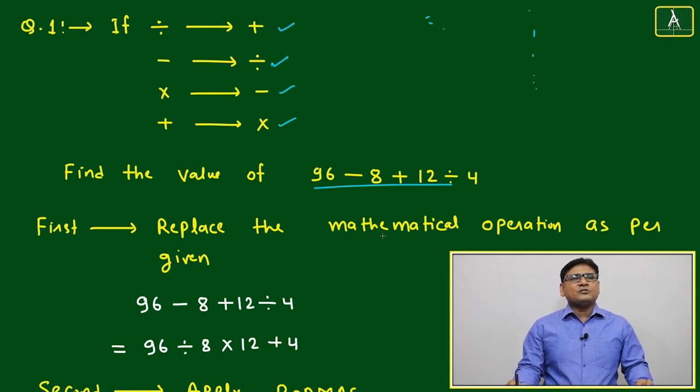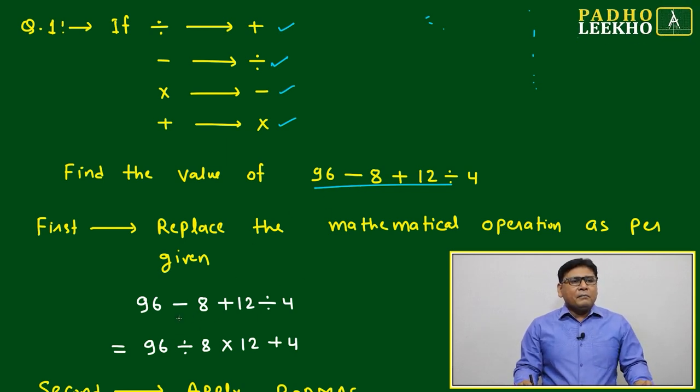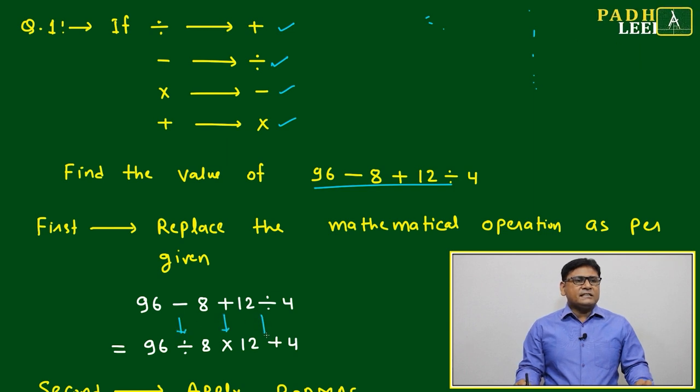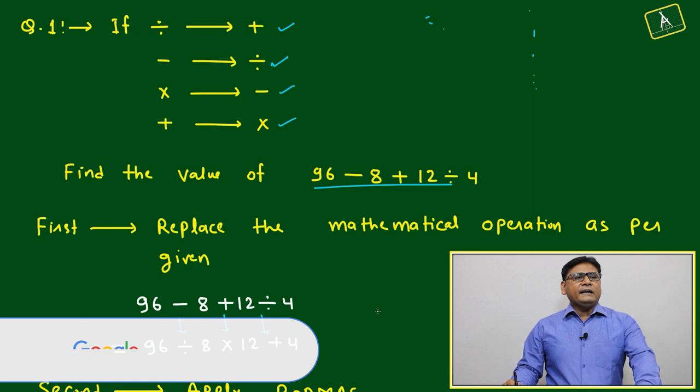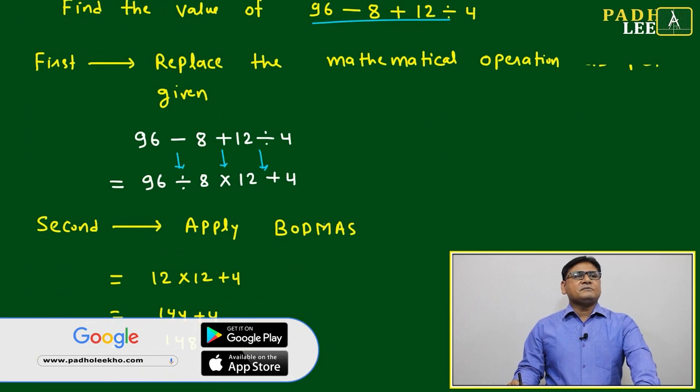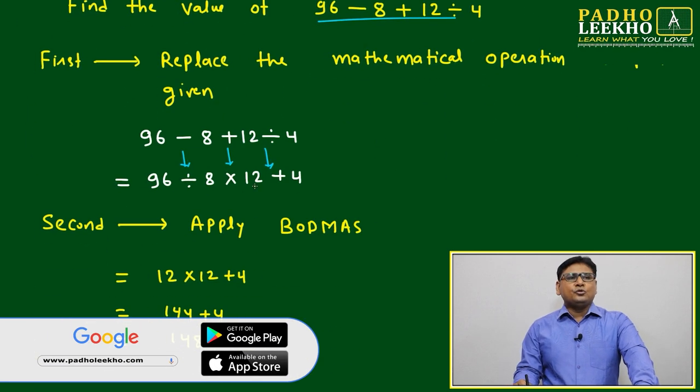Like here 96 minus 8 plus 12 divided by 4, minus will represent by division, this will by this, this will by this. Finally what happened, you got 96 division by 8 into 12 plus 4.